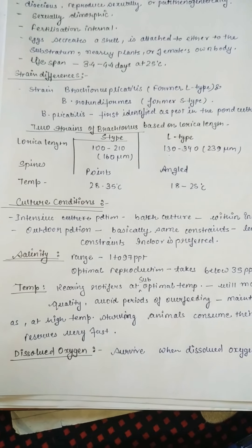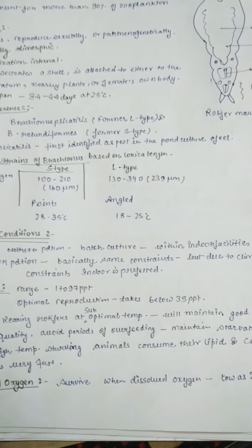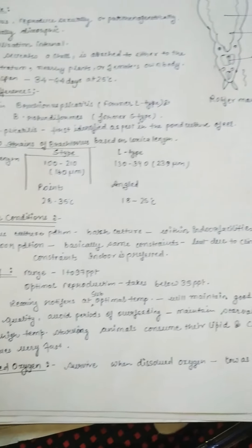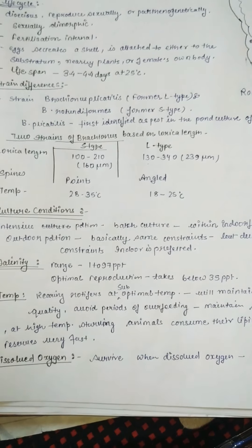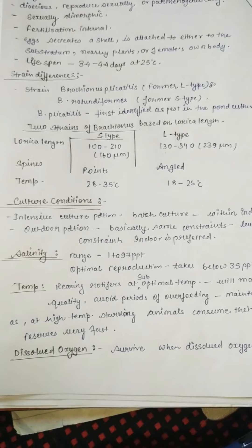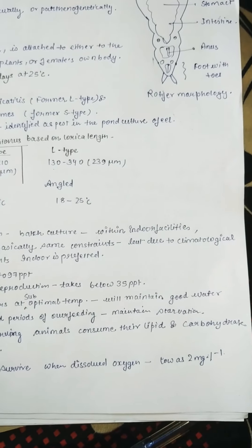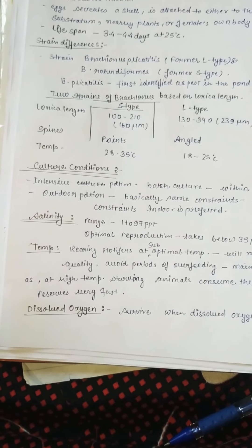Temperature: rearing rotifers at sub-optimal temperature will maintain good water quality, avoid periods of overfeeding, and maintain starvation, as at high temperature starving animals consume their lipid and carbohydrate reserves very fast.